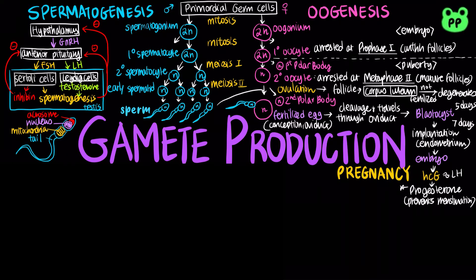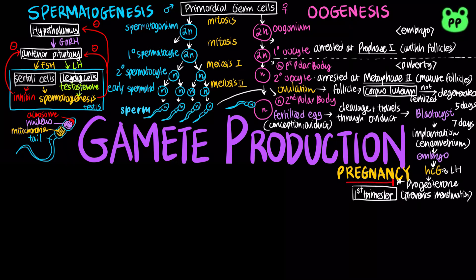Pregnancy or gestation is the condition of carrying one or more embryos in the uterus, and it can be divided into three trimesters. A drug called mifepristone or RU486 can terminate pregnancy non-surgically within the first seven weeks by blocking progesterone receptors in the uterus, thus preventing progesterone from maintaining the pregnancy.